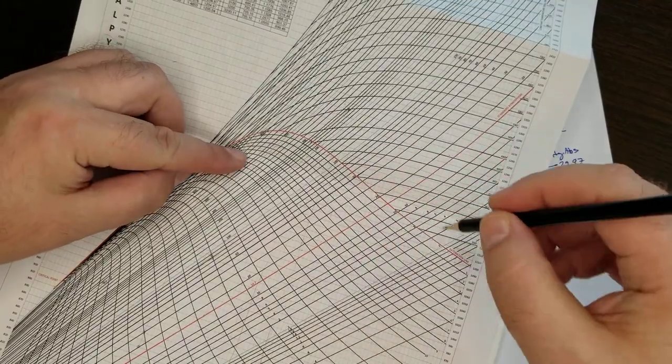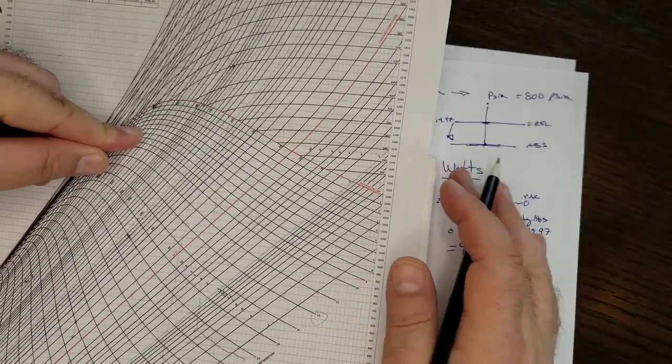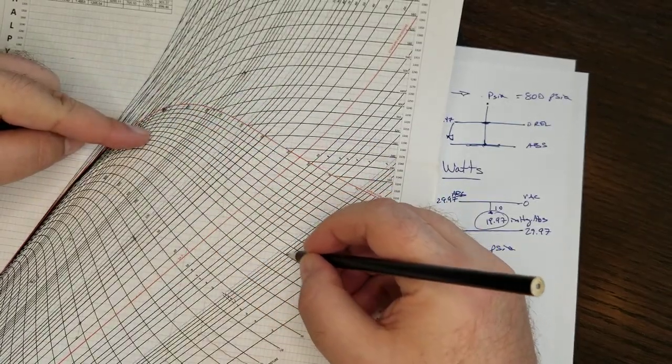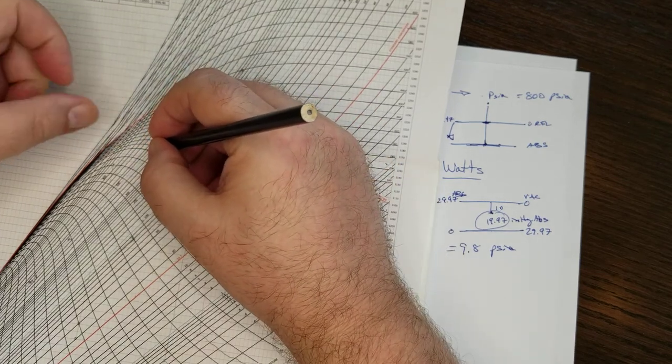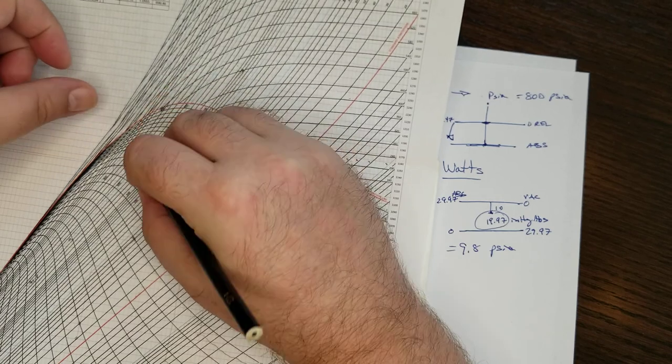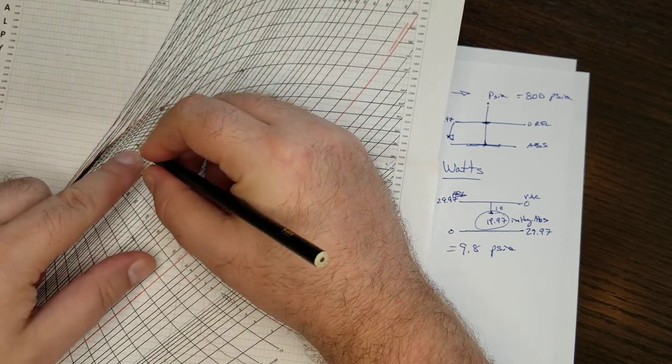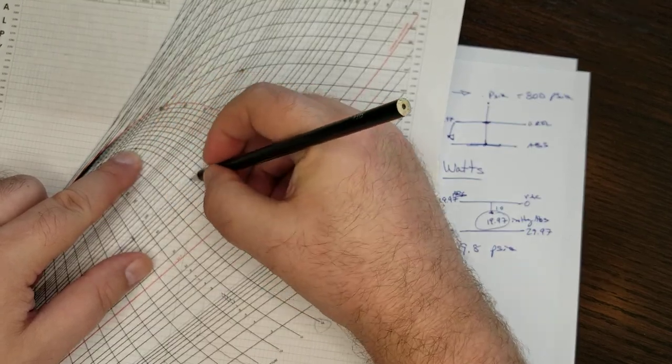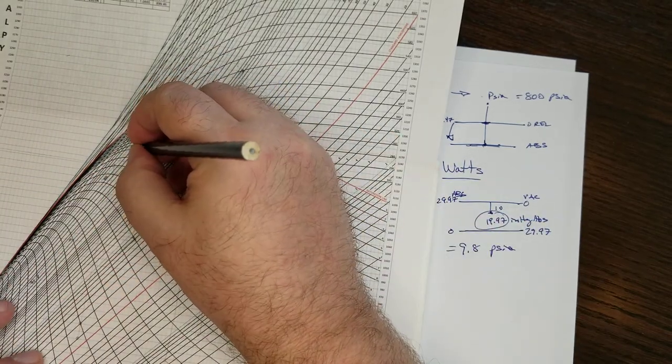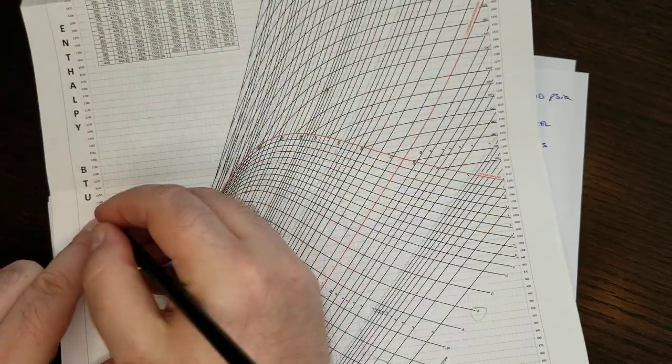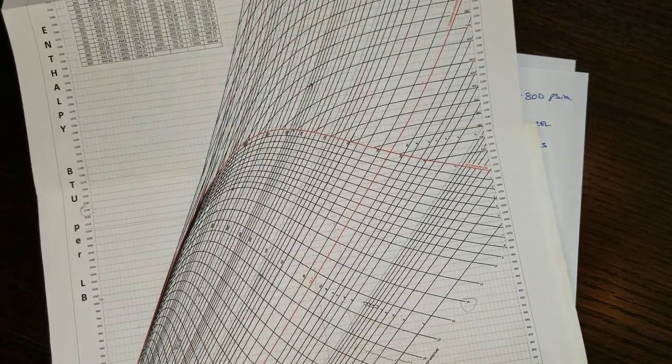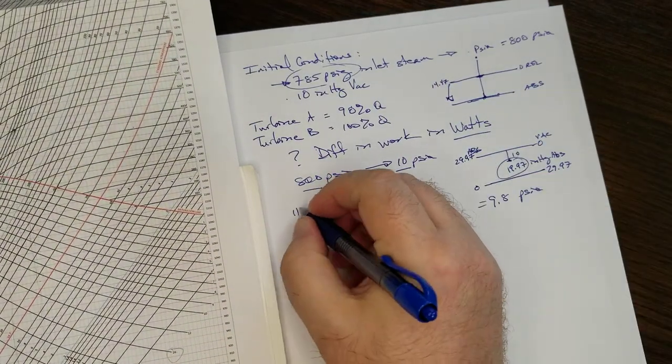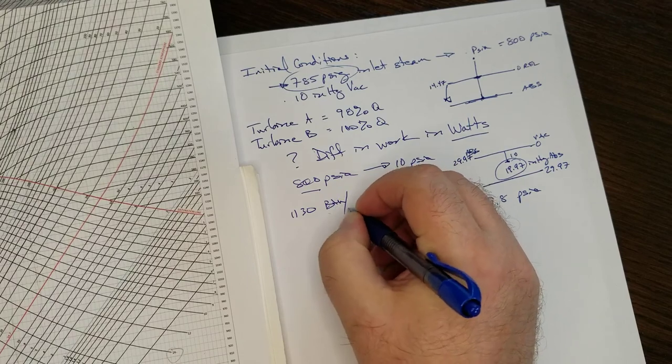So 800, and I said we're starting with 90% quality, which is a 10% moisture content. So I need to find where this moisture content line of 10% crosses the 800 PSIA constant pressure line. And it looks like it's right there. There's 800 pounds, and this is 10%. So that gives me an initial enthalpy of 1130 BTUs per pound mass.